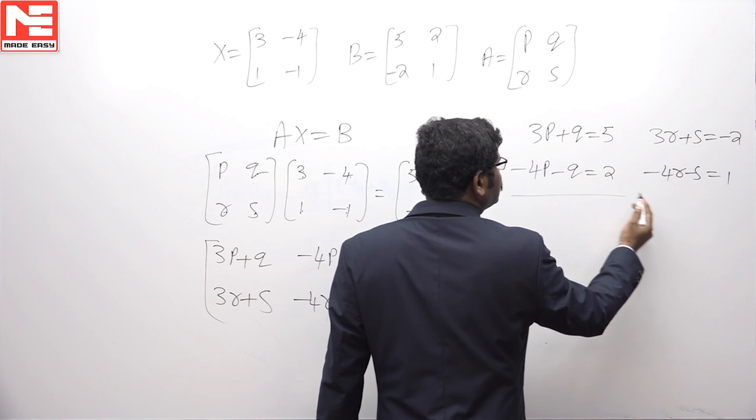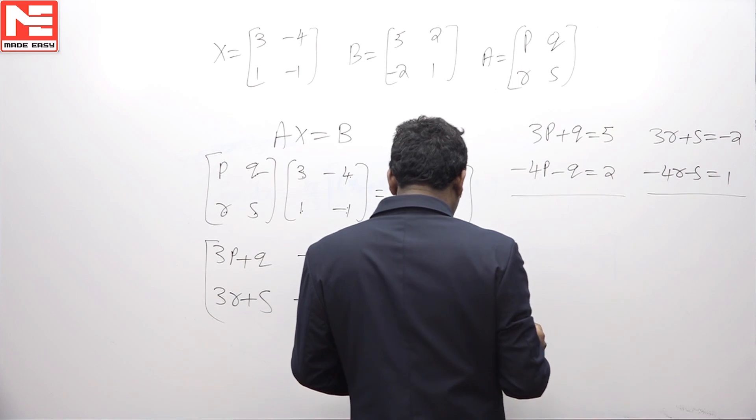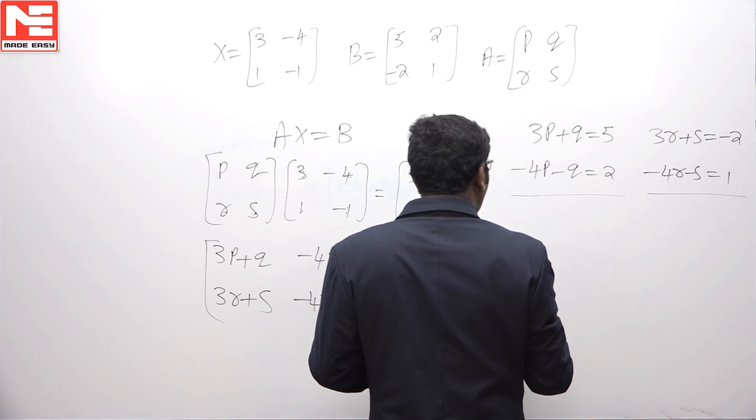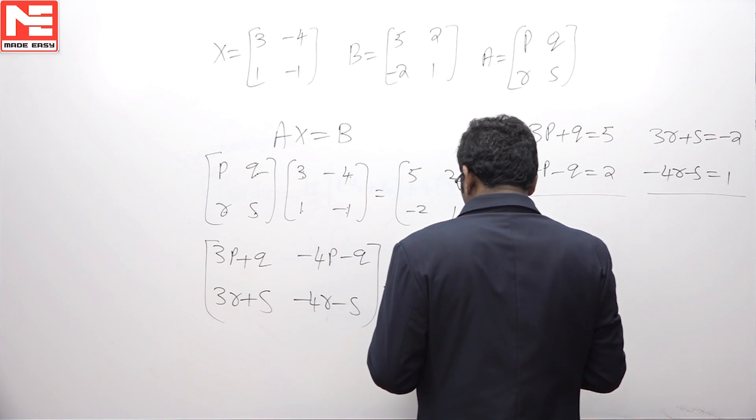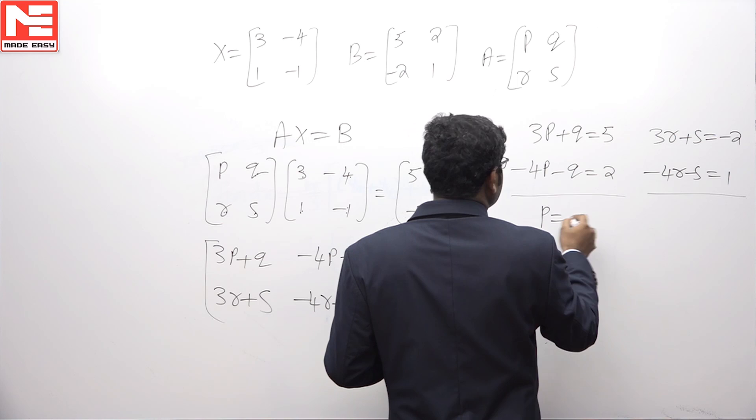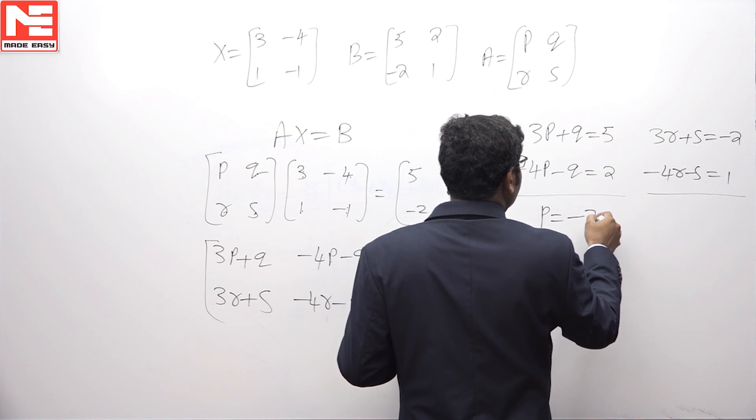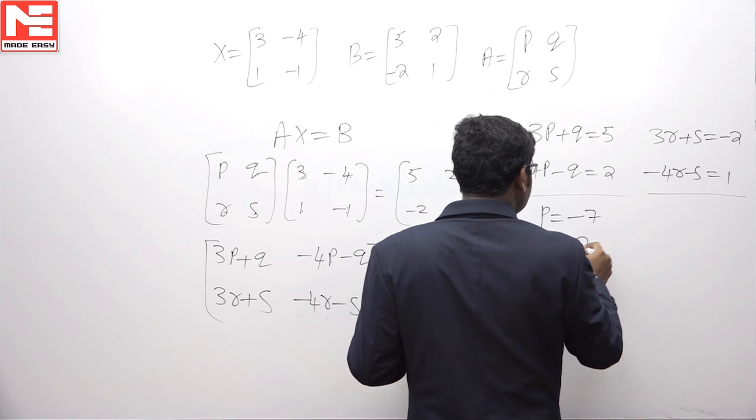By solving these two equations and these two equations, we will get the value of P is minus 7, the value of Q is 26.